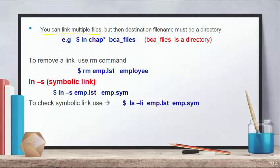If you want to link multiple files to one directory, remember the destination name must be a directory name. For example: ln chap* BCA — this links all files starting with 'chap' into the directory named BCA. To remove a link, use the rm command just as you would remove a file.